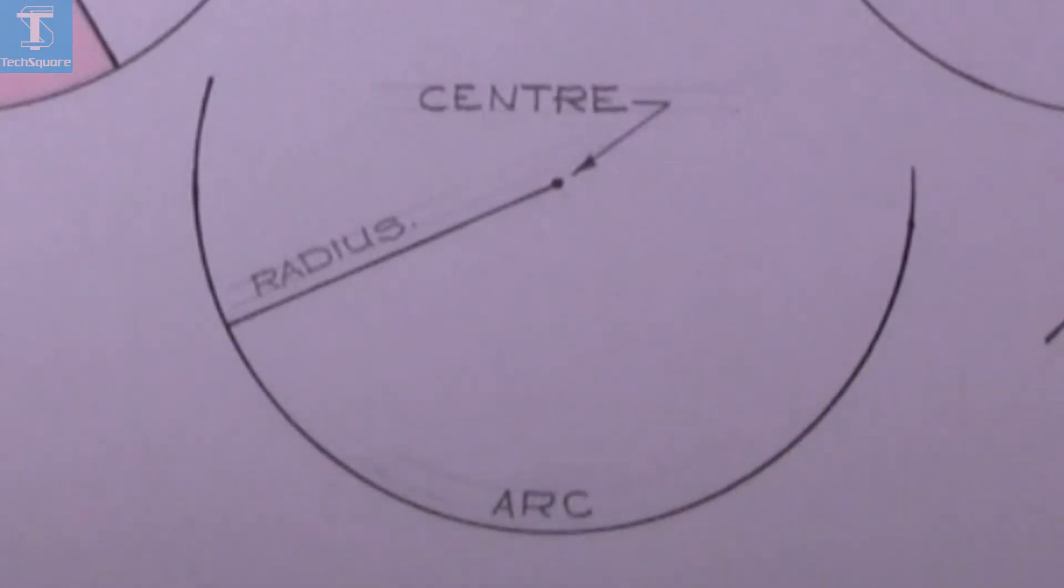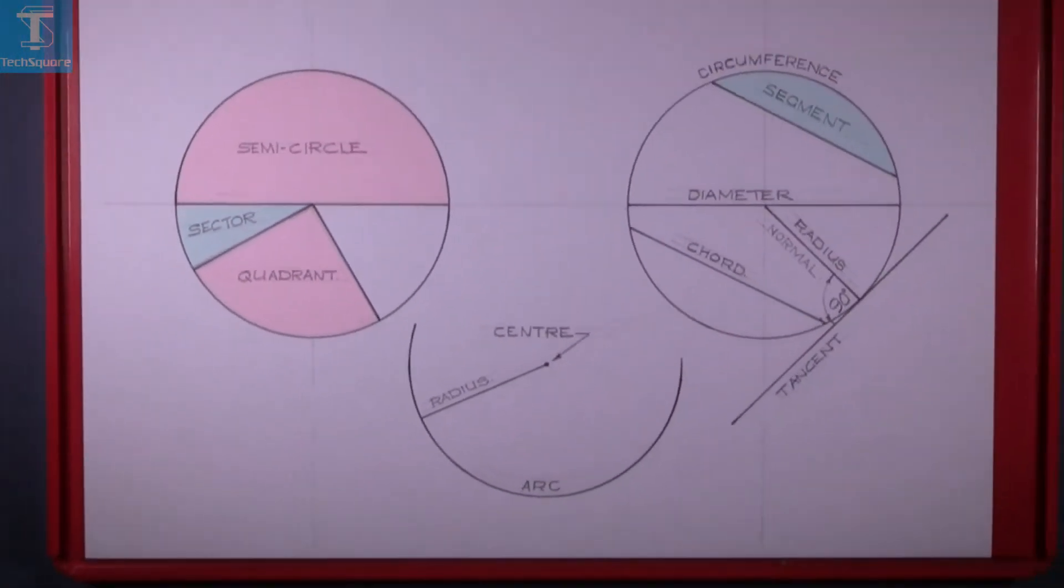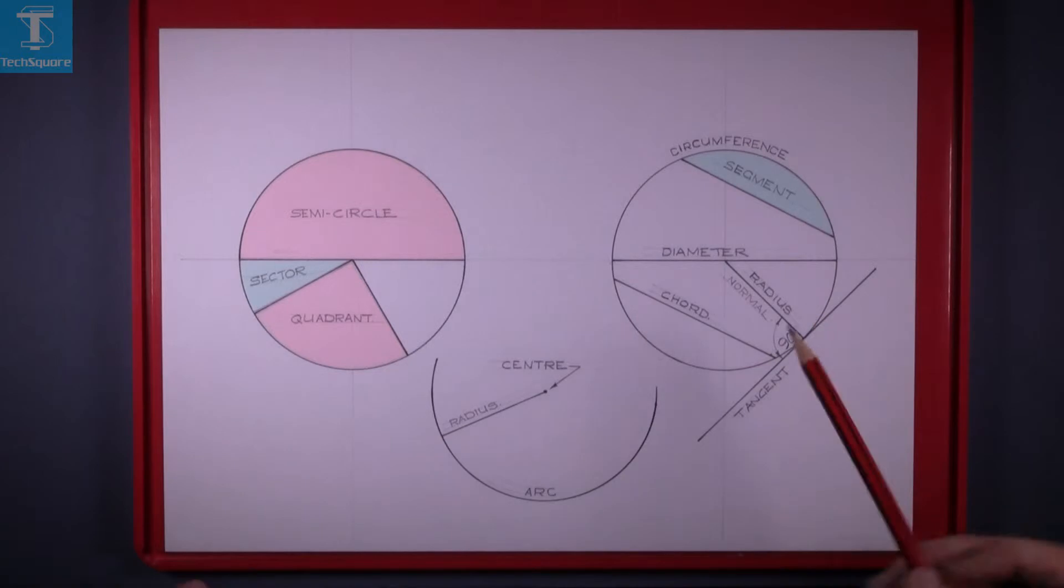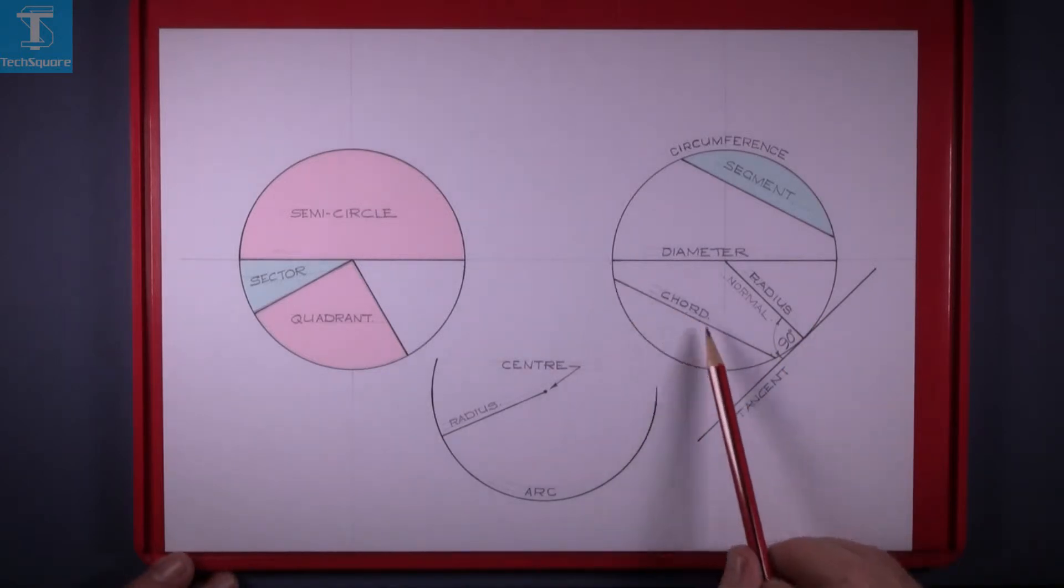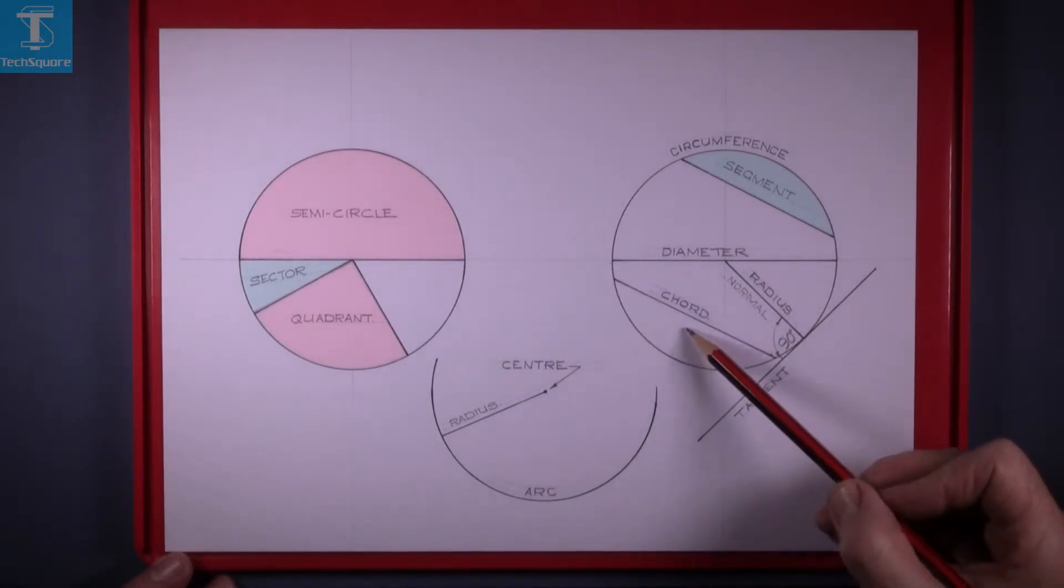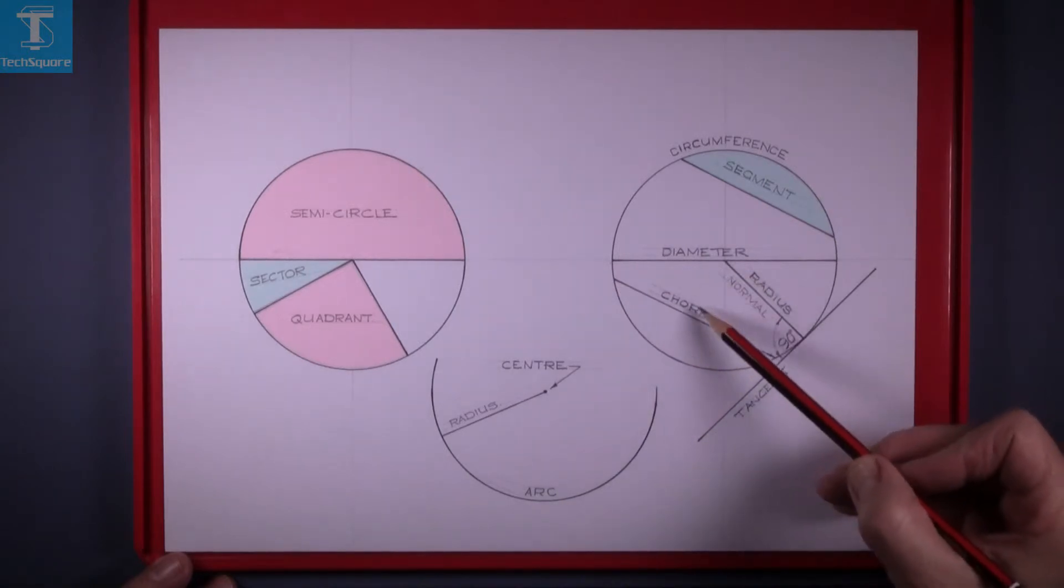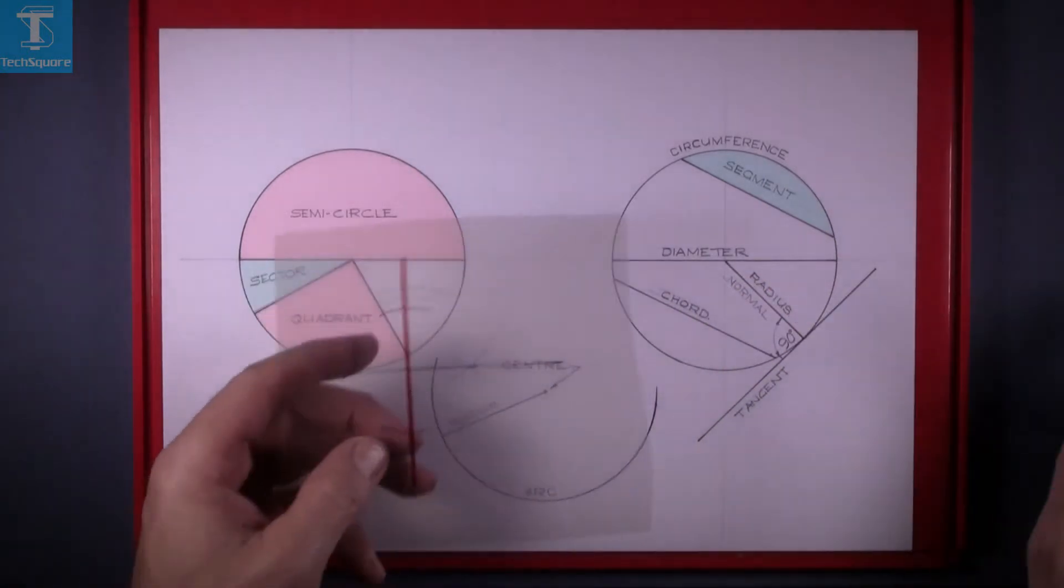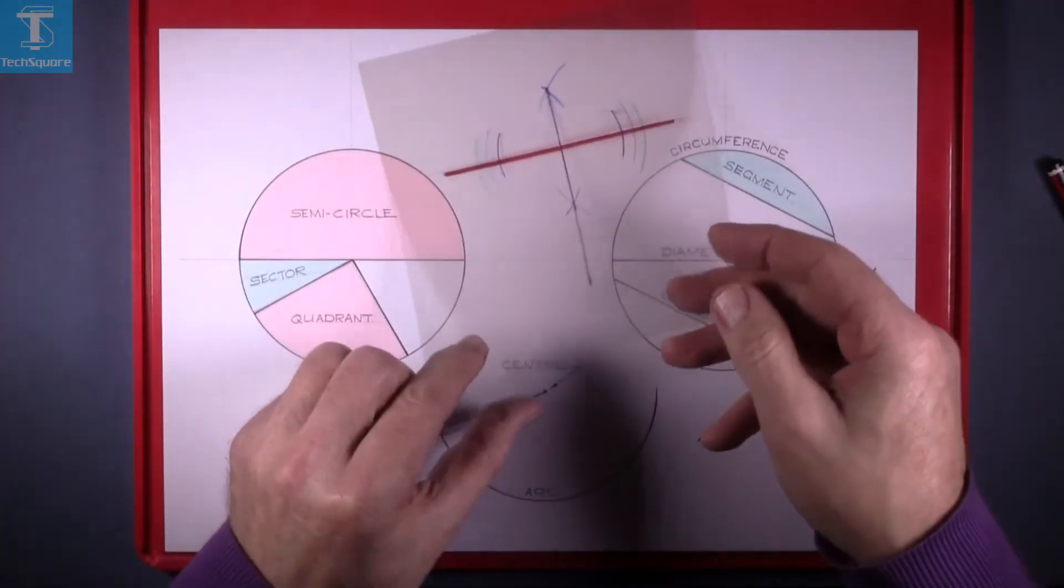So that's the parts of the circle. Now, if you bisect a cord, the bisector will go through the center of the circle. I have this here and I just want to use this to show you.